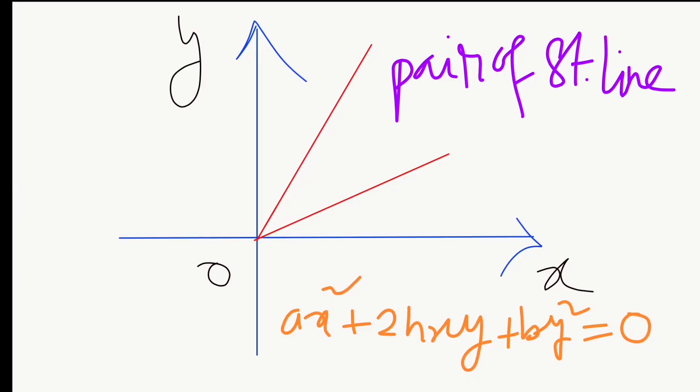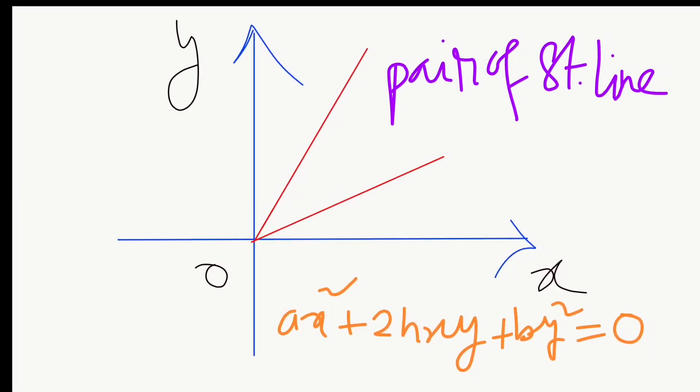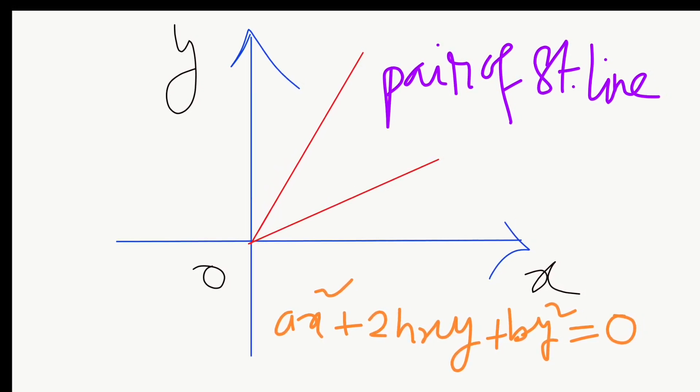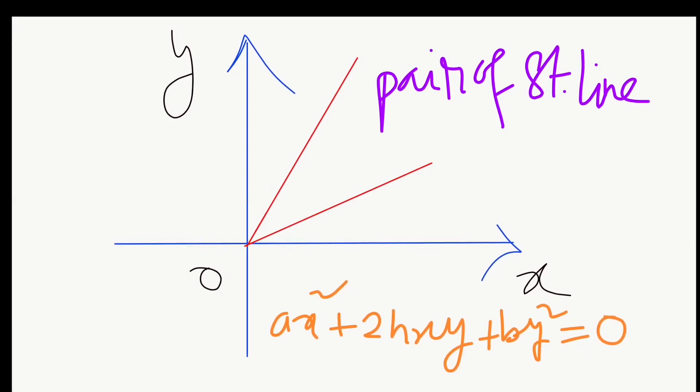When h equals some non-zero term — positive or negative — it gives a pair of straight lines. So if the equation is in the form ax squared plus 2hxy plus by squared equals to zero — that is, a homogeneous second degree equation — then it will become a pair of straight lines, both passing through the origin.